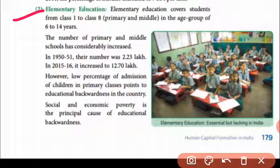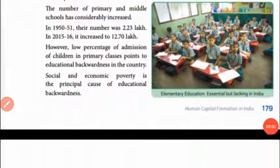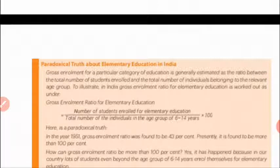Elementary education covers students of Class 1 to 8, in the age group of 6 to 14. The number of middle schools has considerably increased — in 1950-51 the number of students was 2.23 lakh, and by 2016 it increased to 12.70 lakh. However, the low percentage of admission of children in primary class points to educational backwardness in the country. The gross enrollment ratio of elementary education can be calculated as: number of students enrolled in elementary education divided by total number of individuals in the age group of 6 to 14, multiplied by 100.